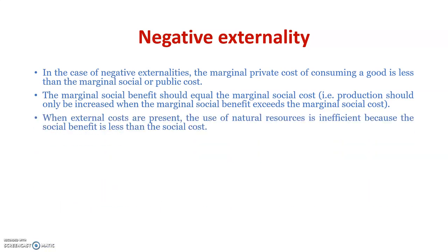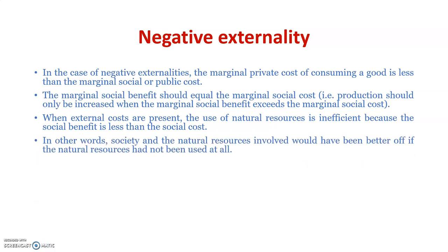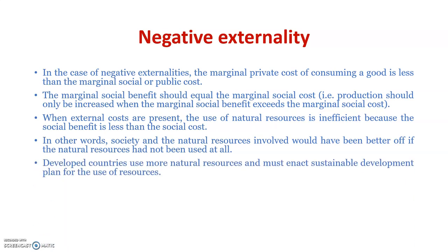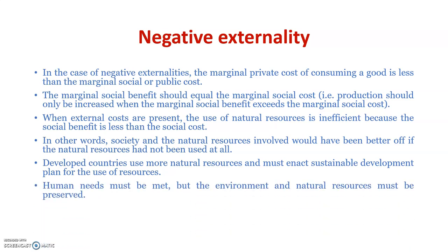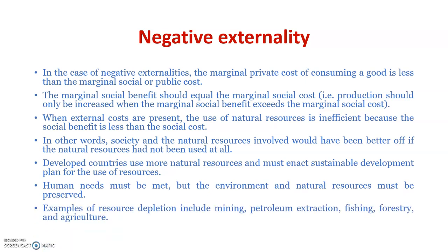When external costs are present, the use of natural resources is inefficient because the social benefit is less than the social cost — society would have been better off if those natural resources had not been used at all. Developed countries use more natural resources and must enact sustainable development plans. Human needs must be met, but the environment and natural resources must be preserved. Examples of resource depletion include mining, petroleum extraction, fishing, forestry, and agriculture.